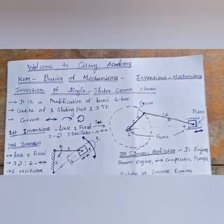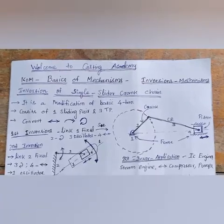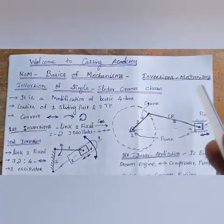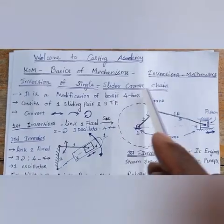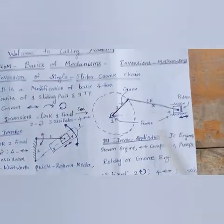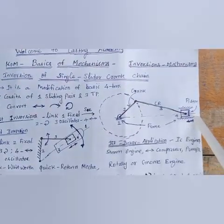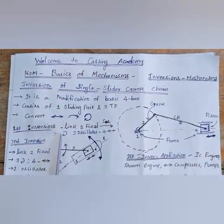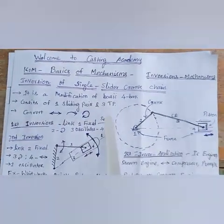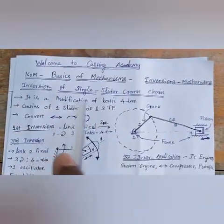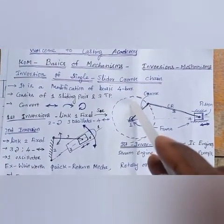Welcome. Our topic is kinematics of machines: inversions of mechanisms. In the previous session we discussed inversions of the four bar chain. In this session we cover inversions of single slider crank chain. In the single slider crank chain, this is the crank, connecting rod, and the piston. This mechanism mainly converts reciprocation into rotary motion. It is a basic modification of the four bar chain.